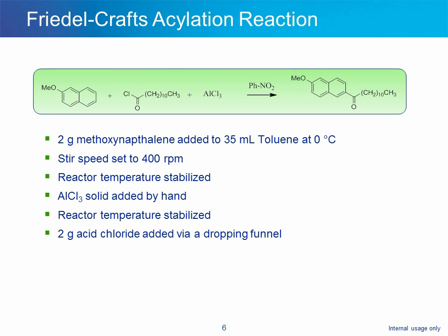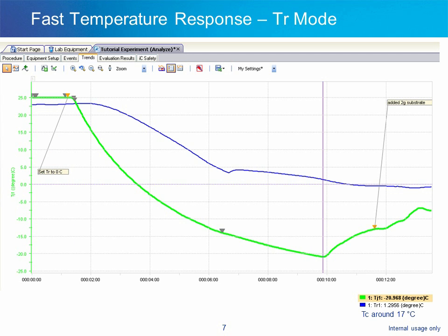The first case study is a Friedel-Crafts acylation. In this example, methoxynaphthalene is added to toluene at 0 degrees Celsius. The speed on the overhead mechanical stirrer is set to 400 RPM, and after the temperature is stabilized, aluminum chloride is manually added. Once again, the temperature is allowed to stabilize, and then an acid chloride is added using a dropping funnel. The EasyMax's capability to rapidly change temperature without the use of a cryostat is notable — using tap water at 17 degrees, the temperature of the toluene was lowered from ambient temperature of about 23 degrees to 0 in just under 10 minutes using EasyMax's integrated thermoelectric cooling capability.